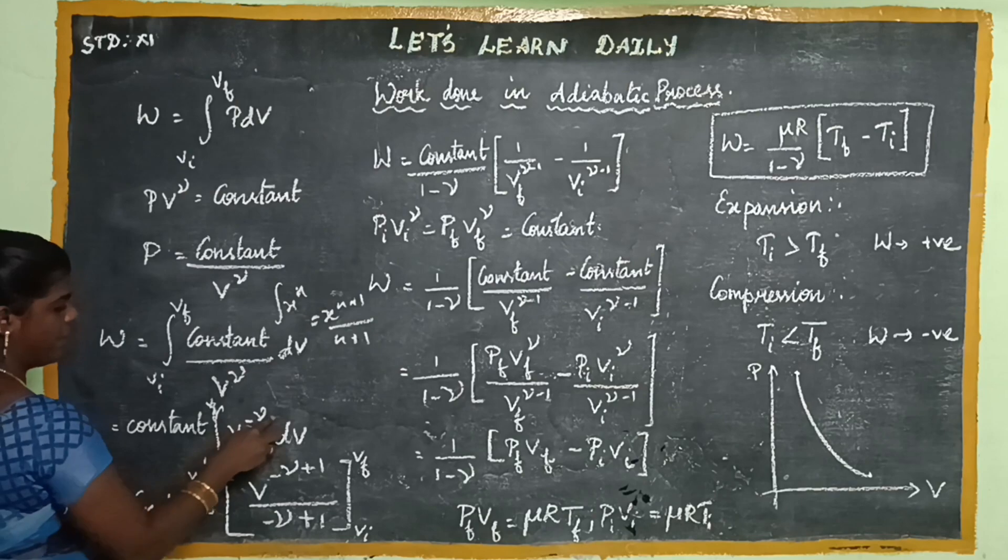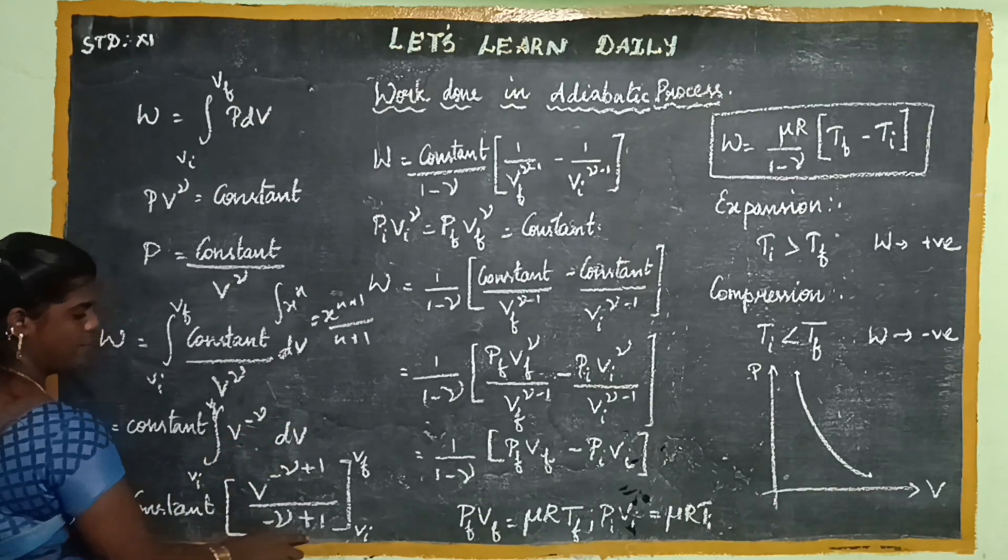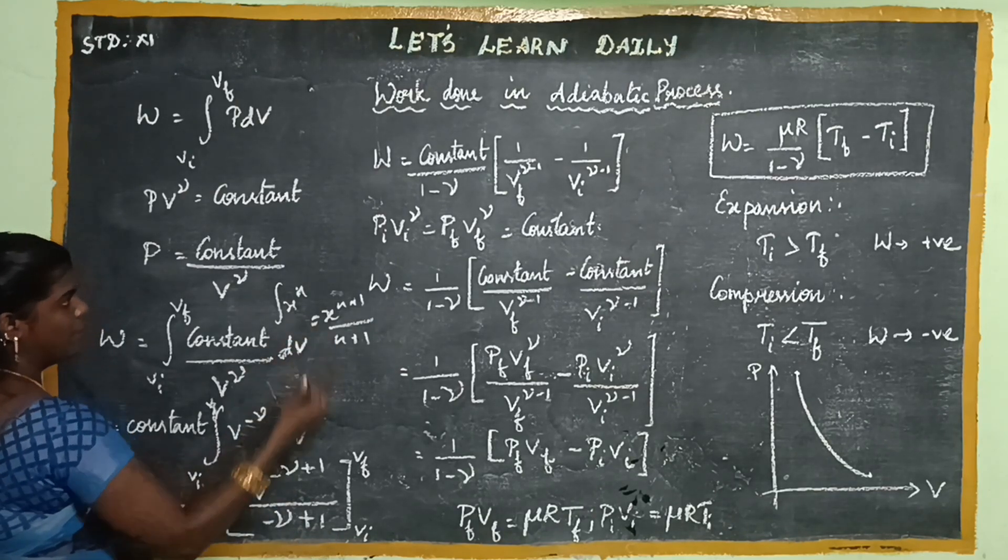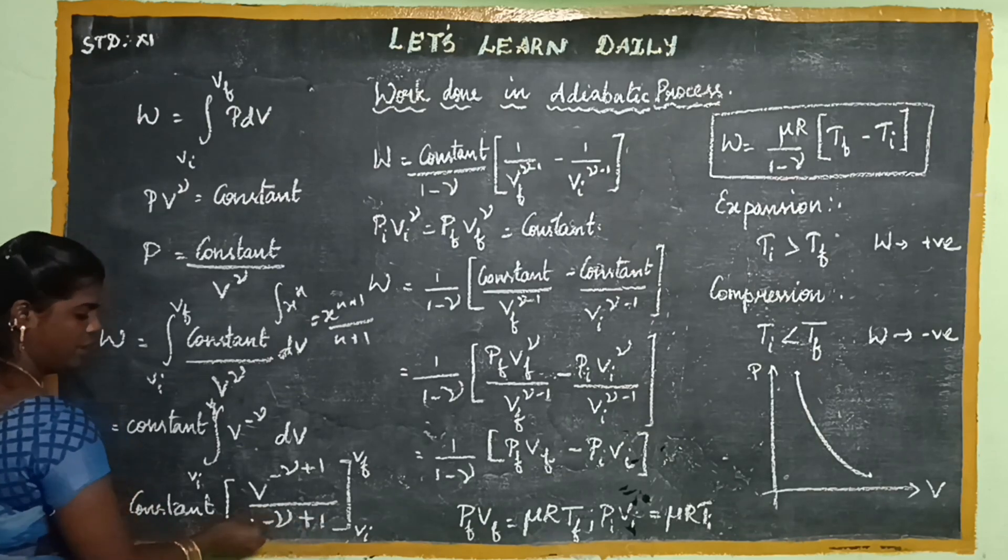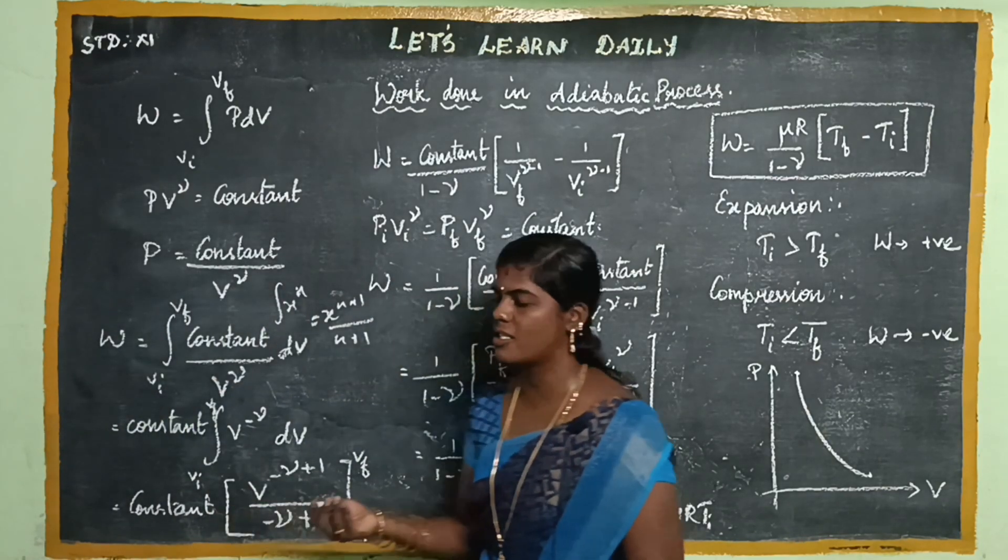So if you have V^(-gamma+1) divided by (-gamma+1). So minus gamma plus 1 equals 1 minus gamma, so you rearrange the terms.